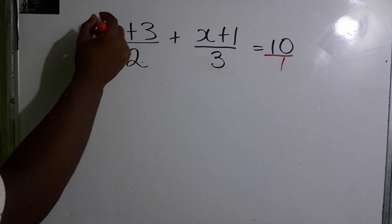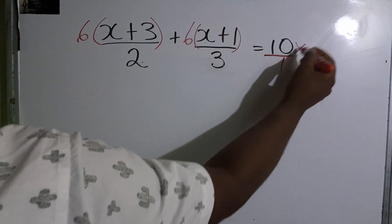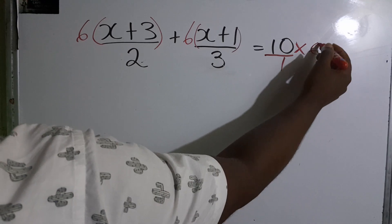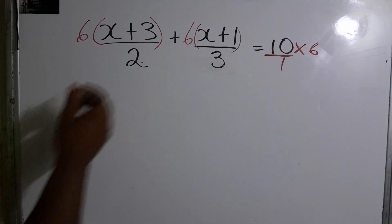So we multiply both or all of them by 6, including this one. That's a very common error students make. They do multiply that by 6.